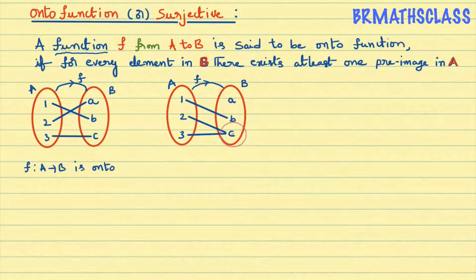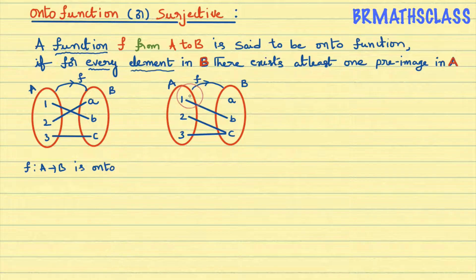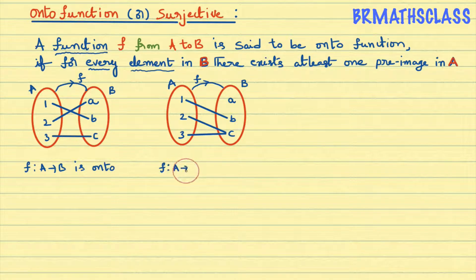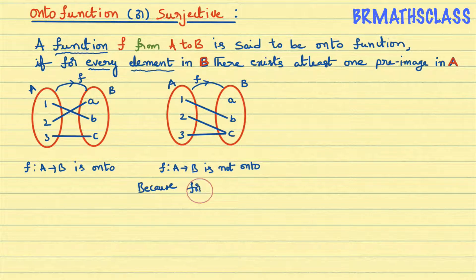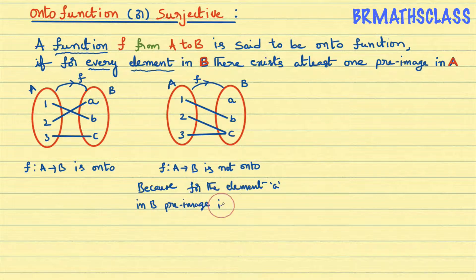Is it an onto function? Observe the definition — for every element in set B. Look at element a: preimage of a is not defined in the question. As per the definition, for every element in set B there must exist at least one preimage in set A. Here it is not onto because the preimage of a is not defined. So, f from A to B is not onto. Reason: for element a in set B, preimage is not defined.